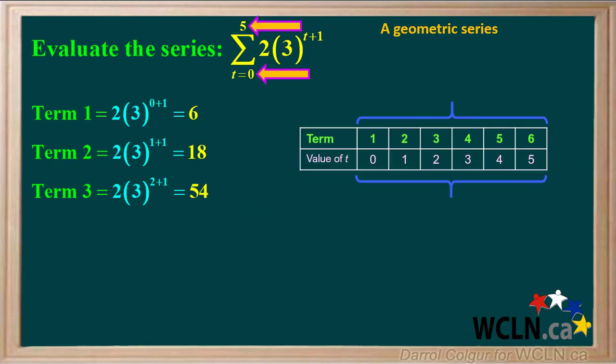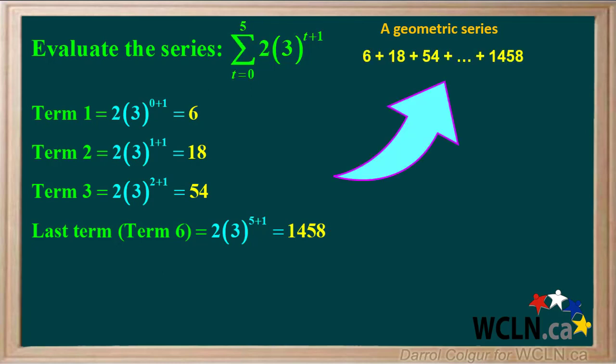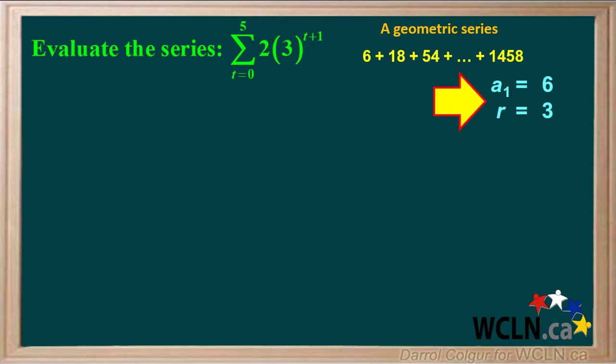Because the value of t ranges from 0 to 5, there are a total of 6 terms in this series. For the last term, which is term 6, we put in 5 for t. This gives us 2 times 3 to the power 6, or 2 times 729, which equals 1458. Looking at these terms, we can determine that a1 equals 6, the common ratio r equals 3, and because t goes from 0 through 5, there are 6 terms, so n equals 6.